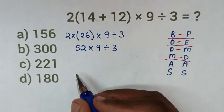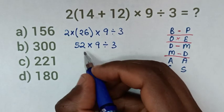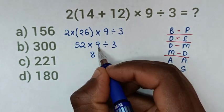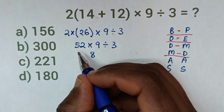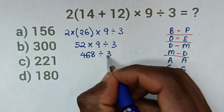In the next step, we have multiplication of 52 × 9. 9 × 2 is 18, carry 1. 9 × 5 is 45, plus 1 is 46. Then, 468 ÷ 3.